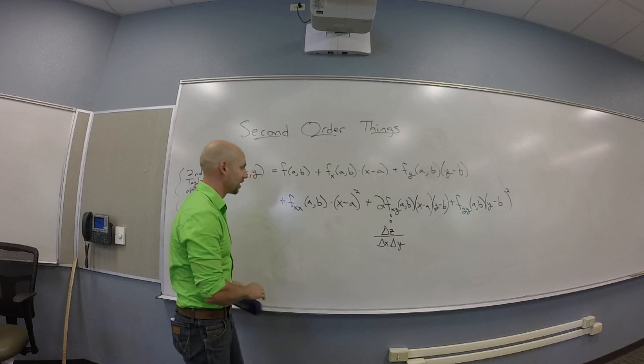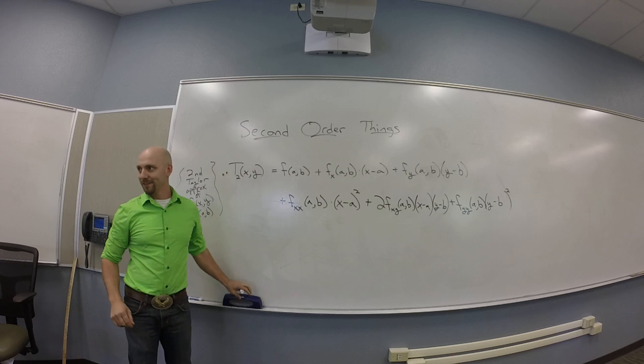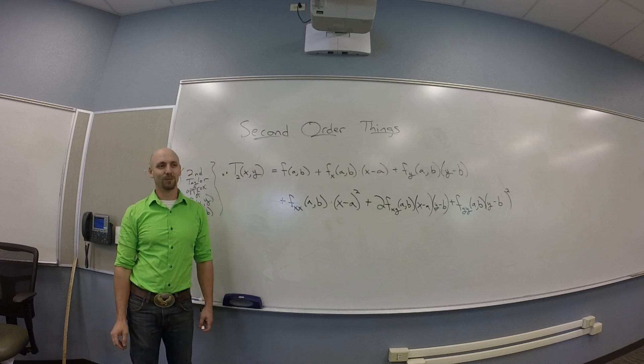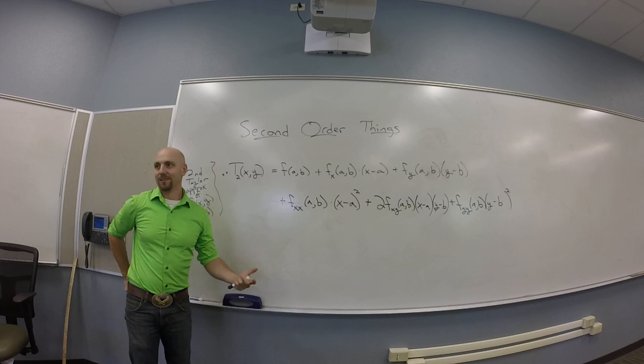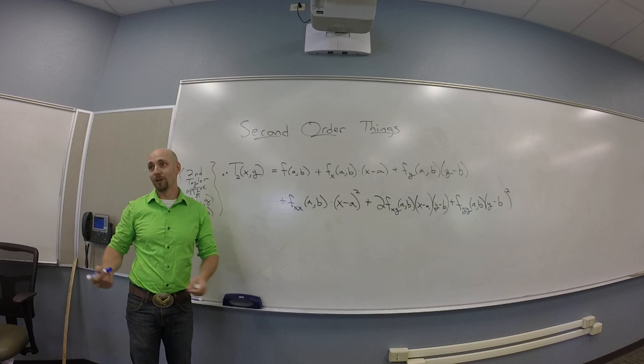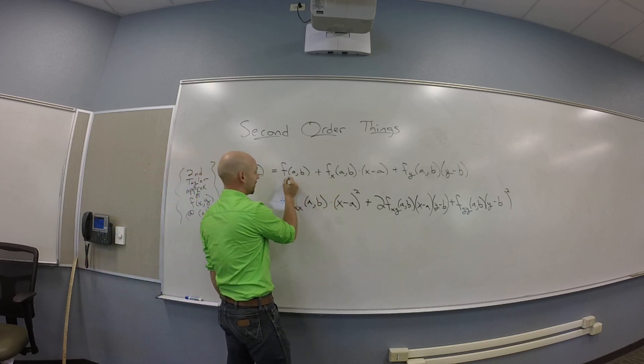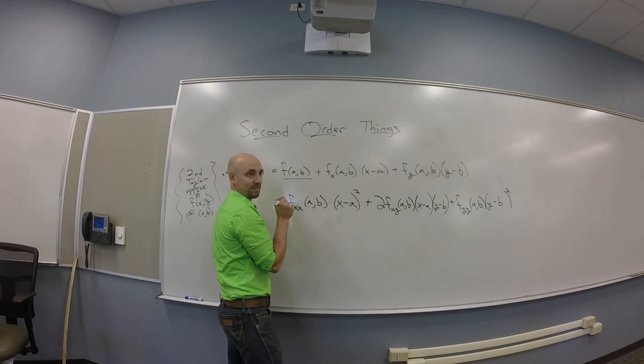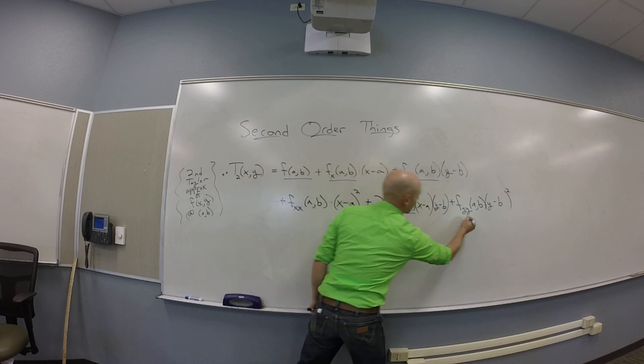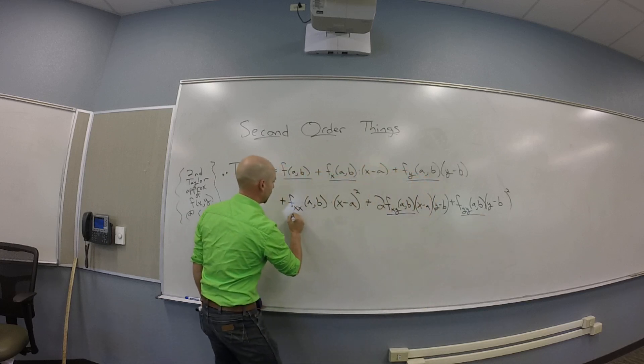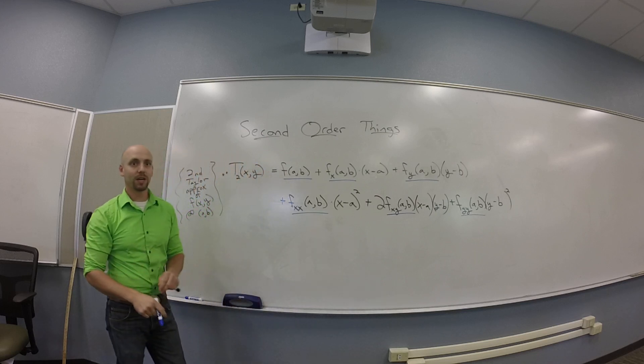Yeah, this almost looks like a polynomial. Why does this thing almost look like a polynomial? Yeah, it is a polynomial. Why is this thing a polynomial? It should be the second order Taylor polynomial. So things that are scalars - all the slopes are actually just numbers. So all those things are scalars.